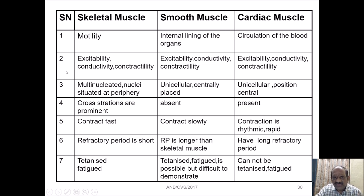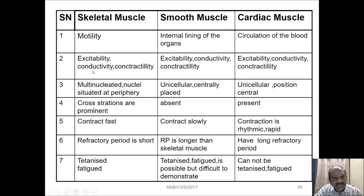All three muscles share three basic properties collectively: excitability, conductivity, and contractility. Regarding contractility, skeletal muscles are voluntary in their contraction, while smooth muscle and cardiac muscle are involuntary.